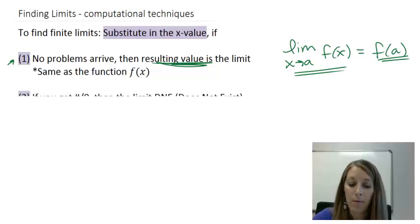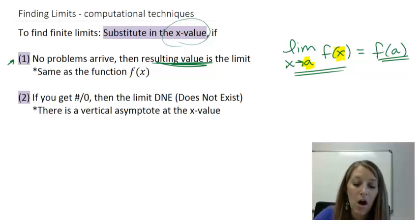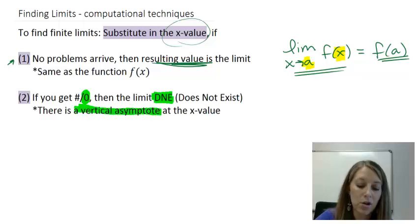Another situation that may come about is if I substitute in my x value into my limit, meaning I substitute my a into my function, if I get something divided by zero, what's going to happen is we don't have to do any work whatsoever. However, our answer is automatically going to be DNE, meaning it does not exist. Because if we go back to graphing rational expressions, we know we got zero in the denominator when our function is undefined, and we graph that by using a vertical asymptote.